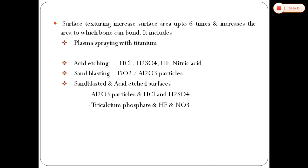Surface texturing increases the surface area up to six times and increases the area to which bone can bond. Techniques include plasma spraying with titanium, acid etching with hydrochloric acid, sulphuric acid, nitric acid, or fluoric acid, sandblasting with titanium oxide or aluminum fluoride, and sandblasting with acid-etched surfaces. This last method combines both mechanical treatment — done by blasting with hydroxyapatite particles — and chemical treatment done by acid etching.